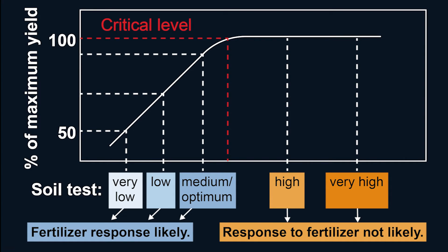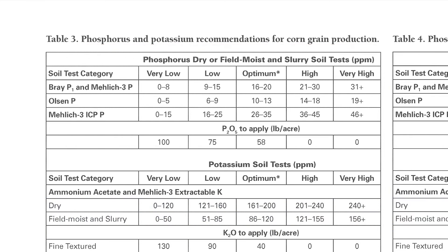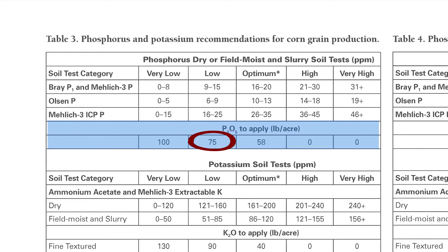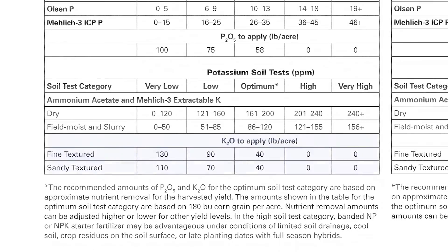Table 3 in the PM1688 publication indicates the response categories of phosphorus and potassium for Iowa corn production. For example, a Melek-3 test value of 12 would be classified as low, and the recommendation is to apply 75 pounds per acre of phosphate. The bottom part of the table gives the recommendations for potassium.